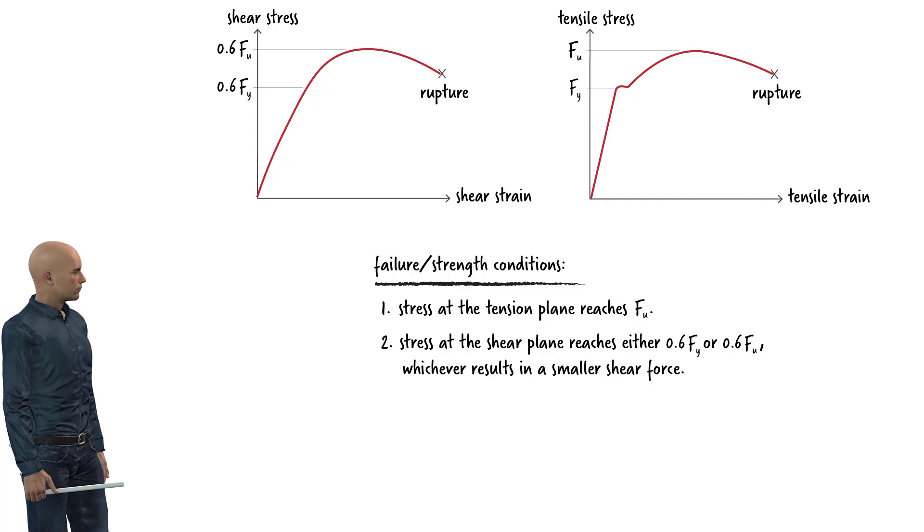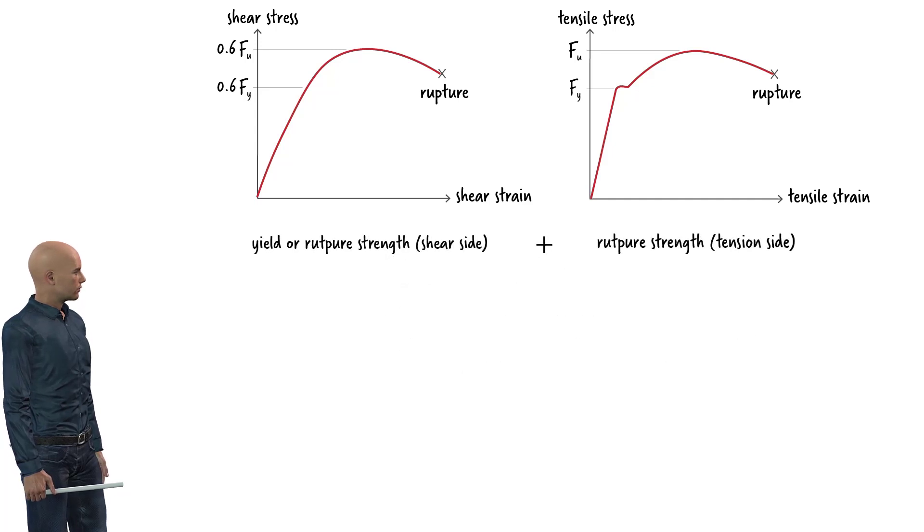Put it differently, block shear failure occurs due to the rupture of the material in the net tension area and either the yielding or rupture of the material in the shear area. Therefore, the block shear strength can be defined as the sum of two strengths.